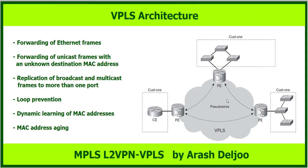Looking at this figure, we choose the PE routers involved with the VPLS instance named Customer One. The customer has several sites, all connected to a PE router. The PE routers have pseudo-wires between them to carry the Ethernet frames. Each pseudo-wire consists of two label-switched paths, or LSPs, one for each direction — like Any Transport over MPLS.